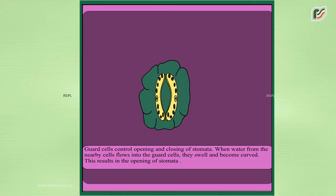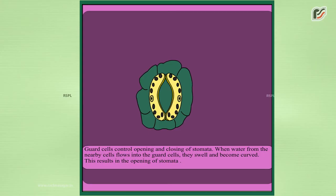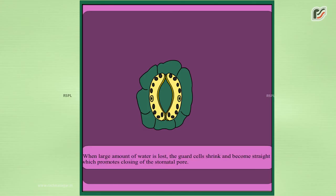When water from the nearby cells flows into the guard cells, they swell and become curved, resulting in the opening of stomata. When a large amount of water is lost, the guard cells shrink and become straight, which promotes closing of the stomatal pore.